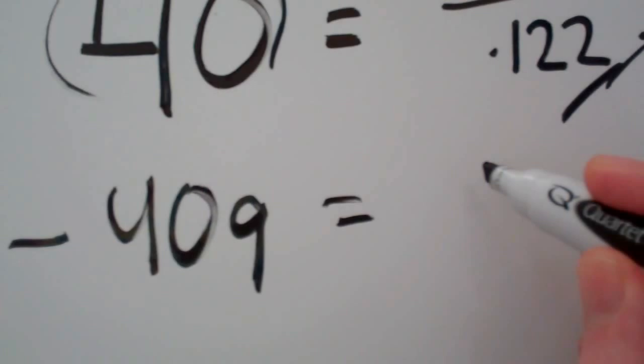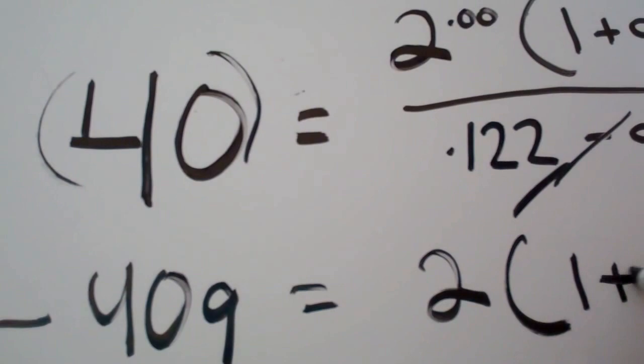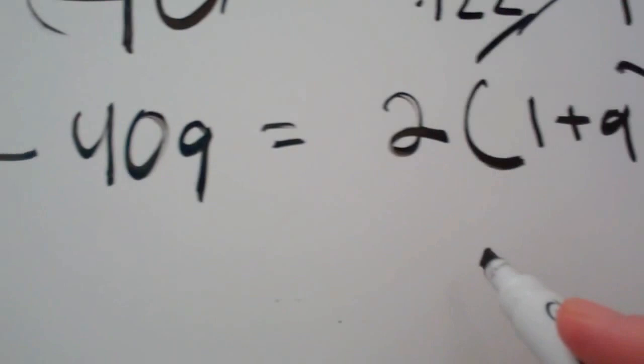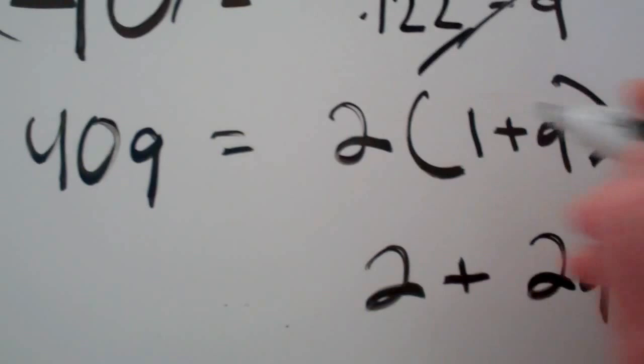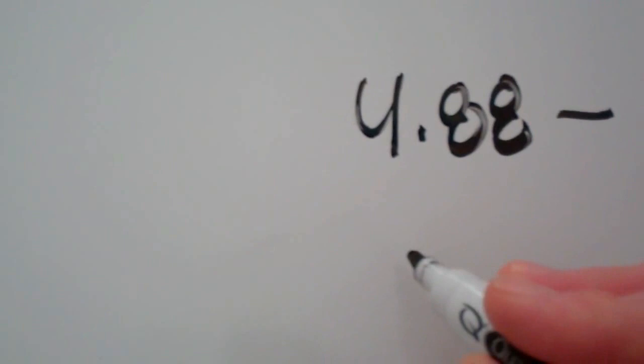Okay. So that's equal to, and we have the top of this equation left over. So we have 2 times 1 plus G. So next thing to do is multiply that 2 through there. So it would just be 2 plus 2G. 2 times G. And then that is equal to what we had over here. Just drop that down. So 4.88 minus 40G.